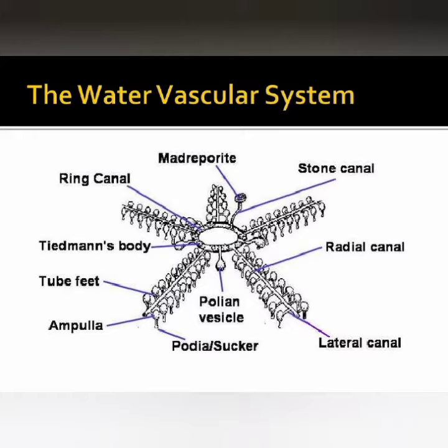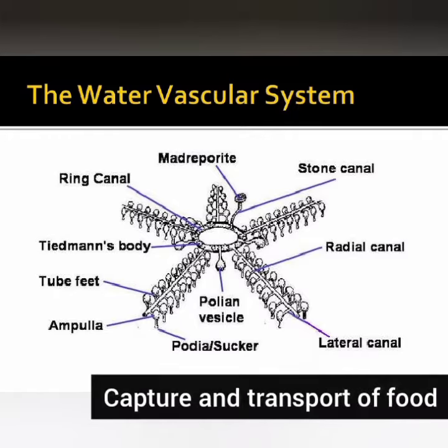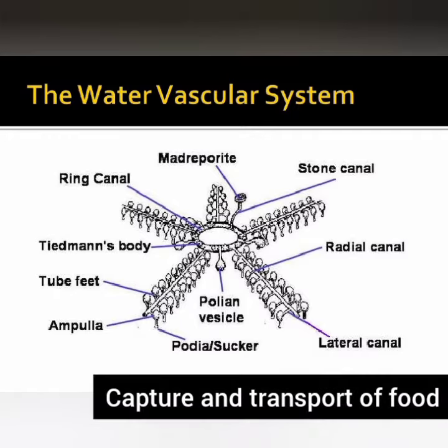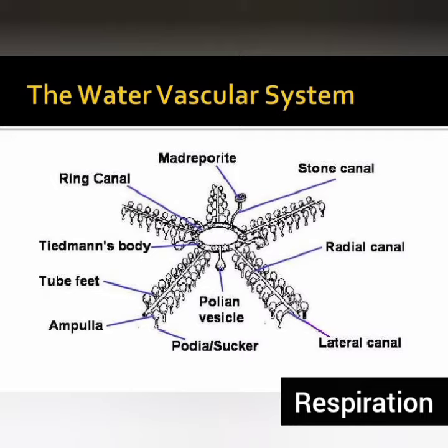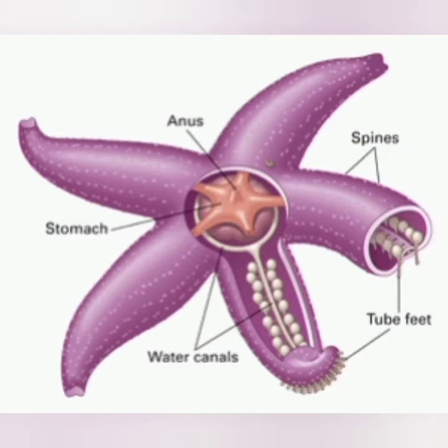The most distinctive feature of Echinodermata is the presence of the water vascular system. This water vascular system helps in locomotion, capture and transport of food, and respiration. An excretory system is completely absent in echinodermates.